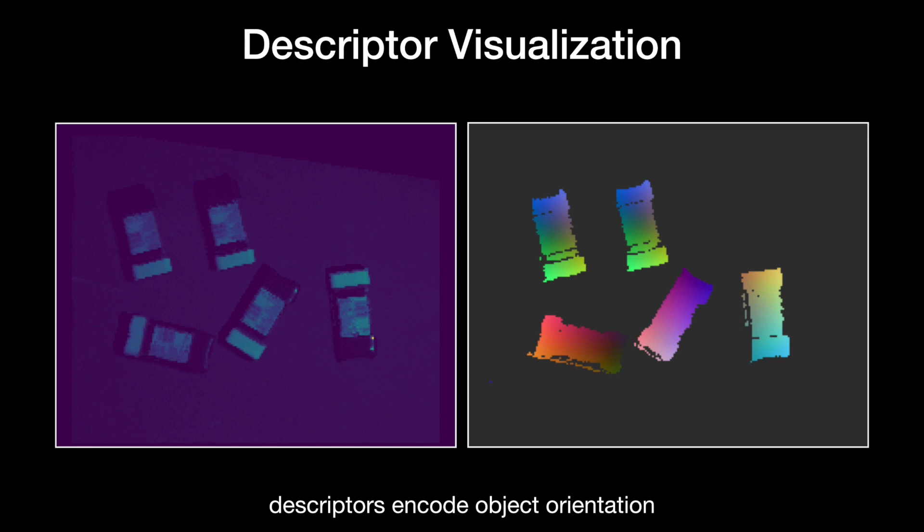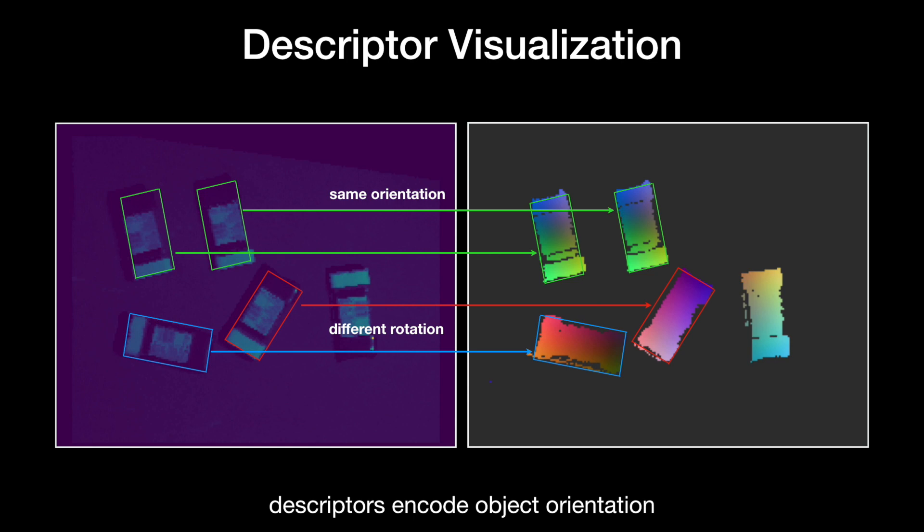First, that the descriptors have learned to encode rotation since the same objects oriented the same way have identical descriptors and those with different orientations have different descriptors. Second, that they have learned spatial correspondence since same points on the same oriented objects share similar descriptors.